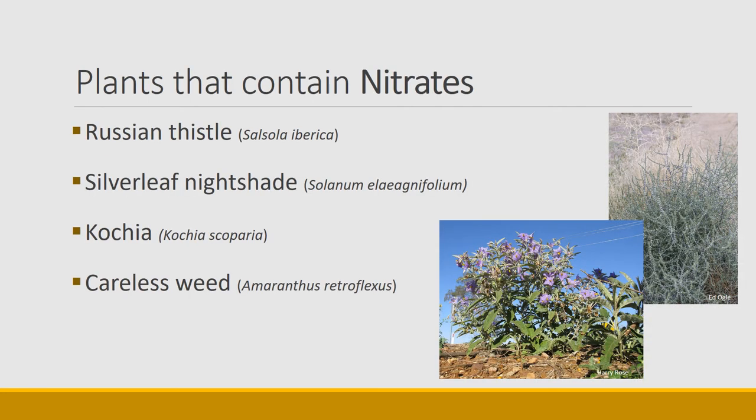Plants that contain nitrates include Russian thistle and silver nightshade, both common in the desert southwest. Koscia and careless weed are others. Many of these are members of the Chenopodiaceae family, so chenopods often have this characteristic of accumulating nitrates.